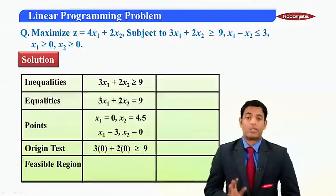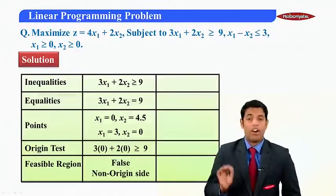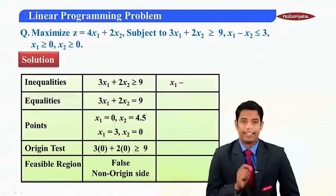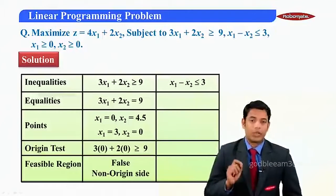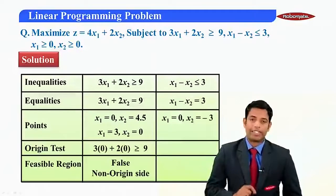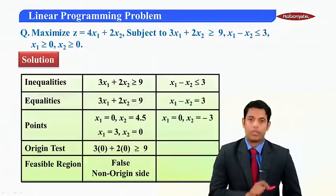So our feasible region will be on non-origin side. Similarly for next inequality, inequality that is x1 minus x2 less than or equal to 3, we'll convert this into equation first, that is x1 minus x2 equal to 3.